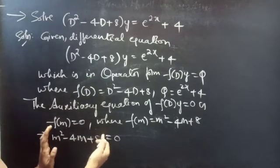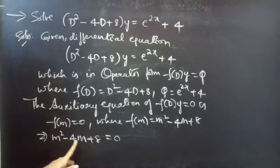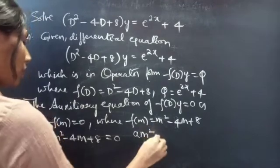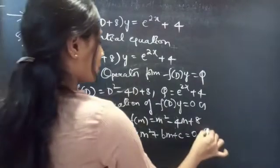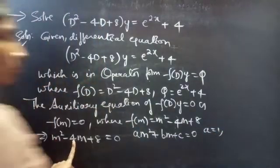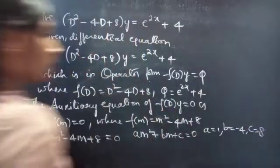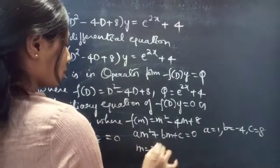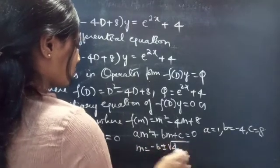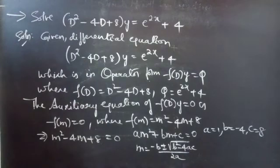It is hard to find factors by factorizing m² - 4m + 8 directly. So we compare with the quadratic form, giving a = 1 (coefficient of m²), b = -4 (coefficient of m), and c = 8. We use the quadratic formula: m = (-b ± √(b² - 4ac)) / 2a to find the roots.